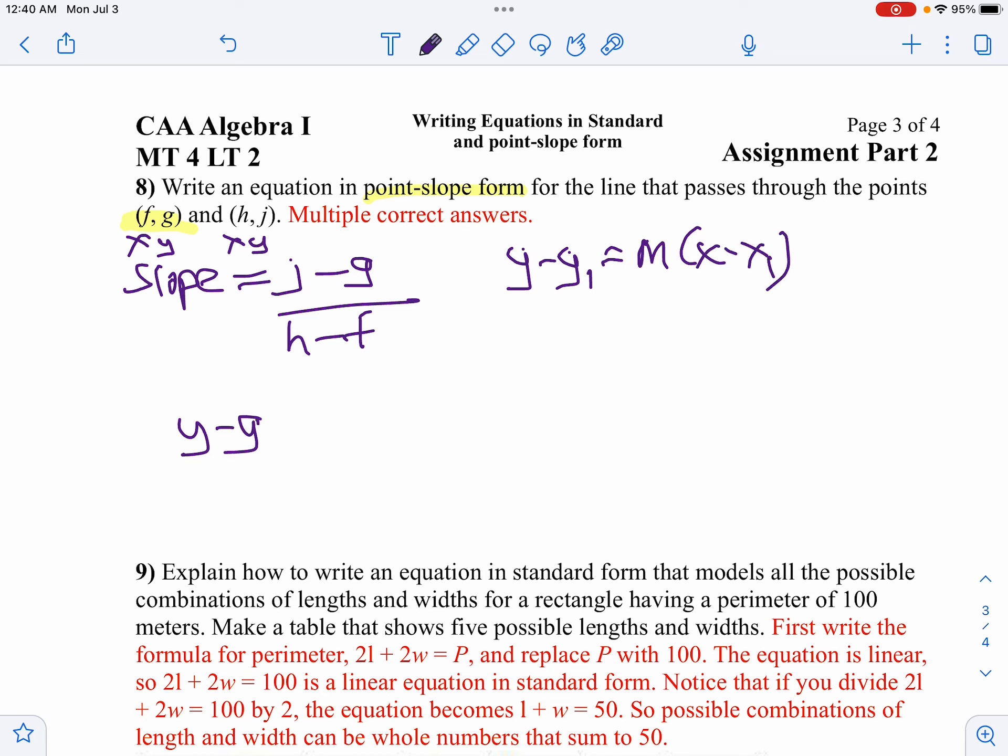So we're going to say y minus g equals our slope, which is j minus g over h minus f, times x minus my x-coordinate, which is f. That's one answer.